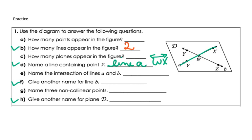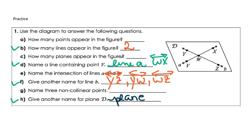Give another name for line B — again, this has multiple answers. One answer could be Y, Z. Another could be Y, W, or W, Z. Give another name for plane D. You want to give three points that are not collinear — any three points that are on the plane. One example is plane X, W, Z. The main piece here is it has to be non-collinear, not in a straight line, to name your plane.